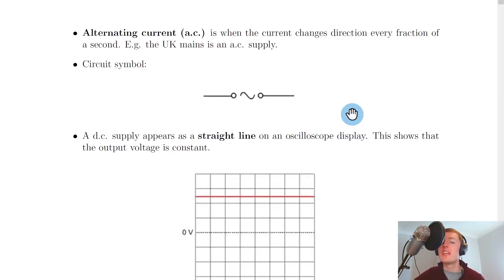And the circuit symbol for an AC supply looks like this, where you've got two little circles again separated by some space, but within the space this time we've got a little wave pattern. You might also see an AC supply drawn with a circle surrounding the little wave pattern in the middle.